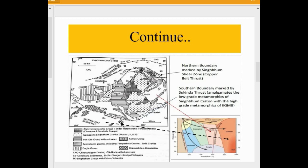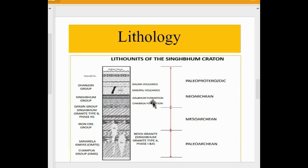The lithology of the Singhbhum Craton includes: Paleoarchean rocks comprising the Champua Group and Saraikela Group, which contain Bejari Granite and Singhbhum Granite. Mesoarchean rocks comprise the Iron Ore Group and Singhbhum Granite Type B phase, which also includes the Dhanjori Group. The Neoarchean and Paleoproterozoic sequences consist of the Singhbhum Group and Dhanjori Group, including the Chaibasa Formation, Dhalbhum Formation, Simlipal Volcanics, and Dalma Volcanics.